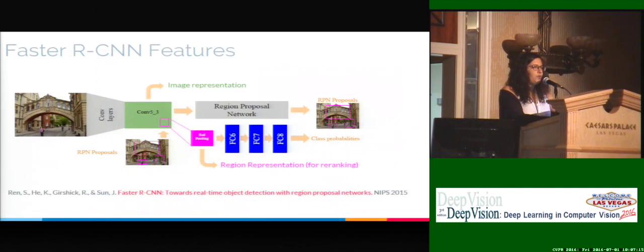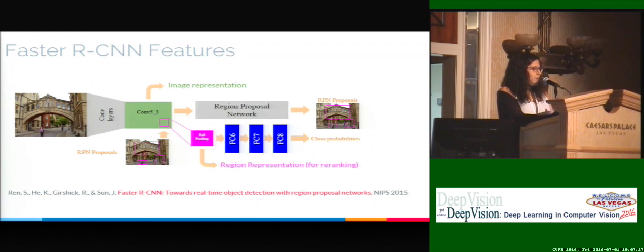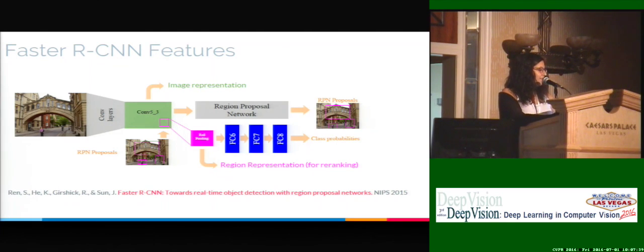In this work, instead of using a CNN trained for classification, we use Faster R-CNN, which is a network trained for object detection. It receives an image as input and outputs a set of bounding boxes with class scores. In the Faster R-CNN process, the network operates on the image at both global and local scale, meaning we can extract both global and local features in a single forward pass from an image.